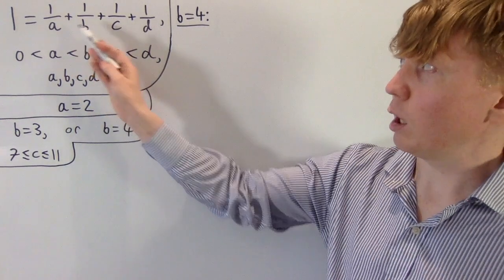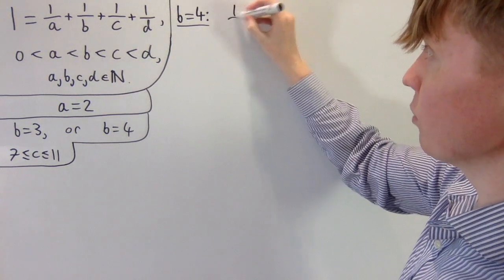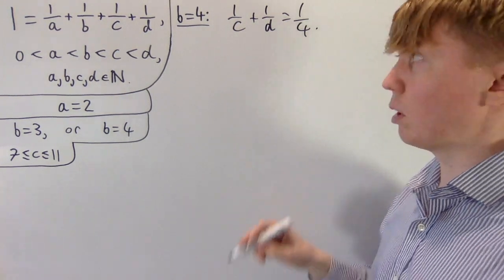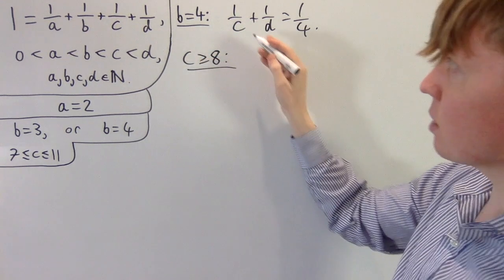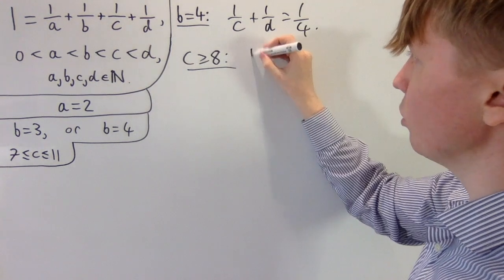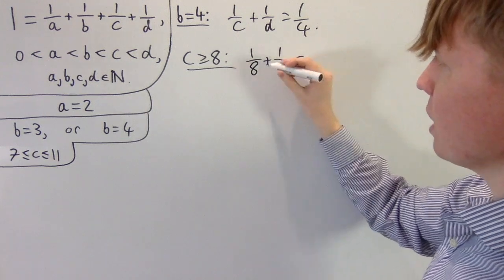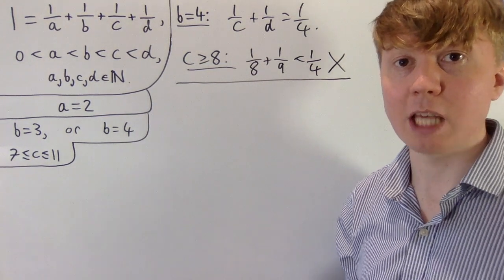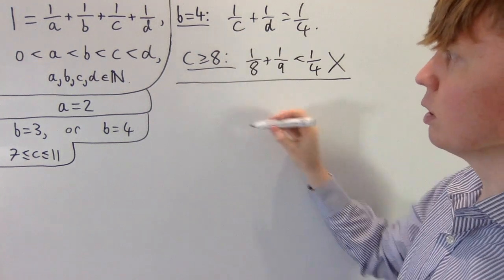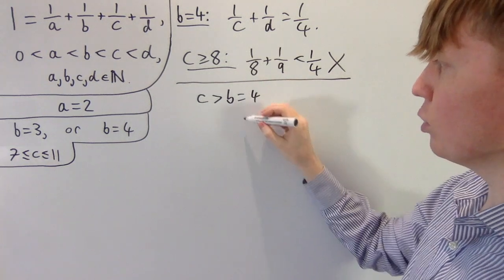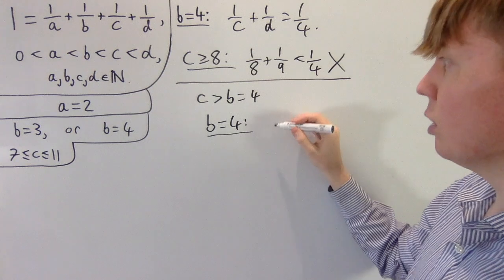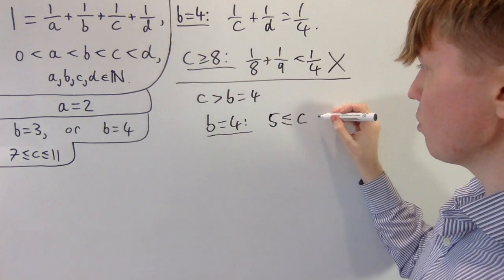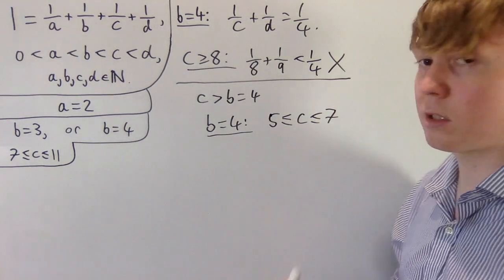When b is four, we need one equals one half plus one quarter plus one over c plus one over d, so one over c plus one over d must equal one quarter. For an upper bound on c: if c is greater than or equal to eight, the best case is one eighth plus one ninth, which is less than two eighths, or less than one quarter. So c can't be greater than or equal to eight. For a lower bound, c must be greater than b equals four, so c is at least five. Therefore when b is four, c lies between five and seven — it's either five, six, or seven.